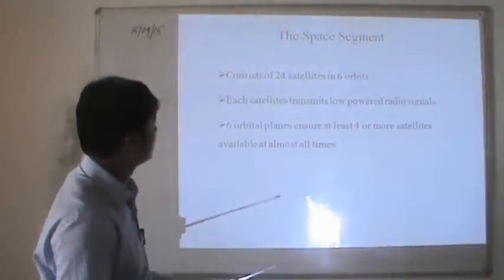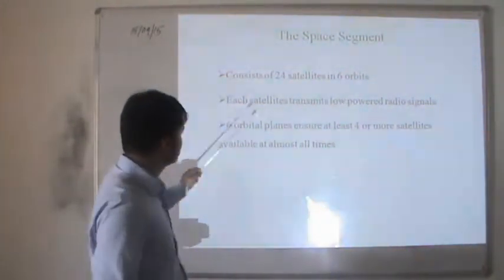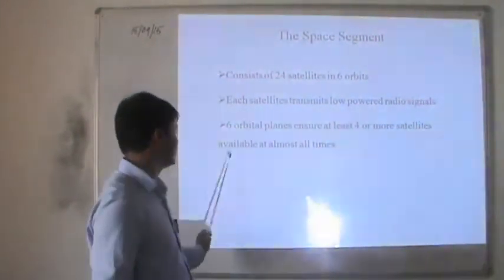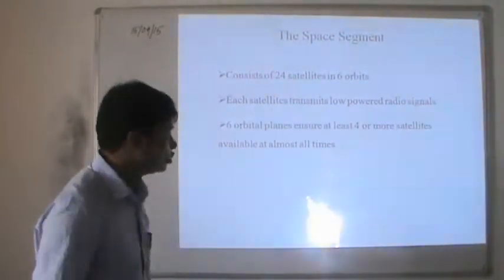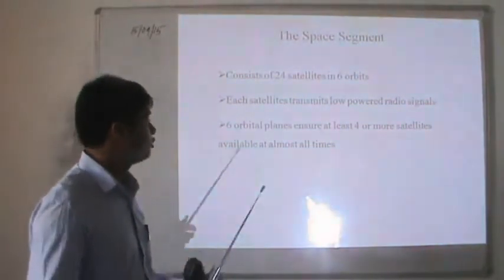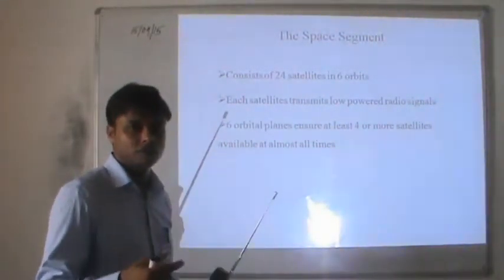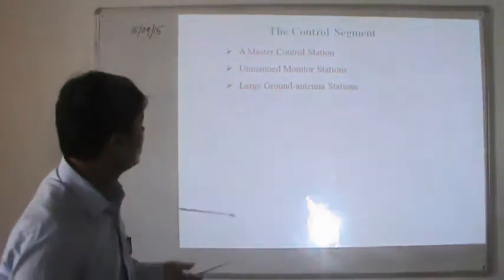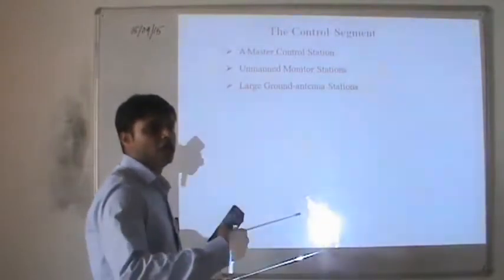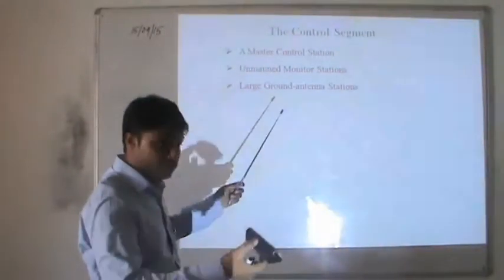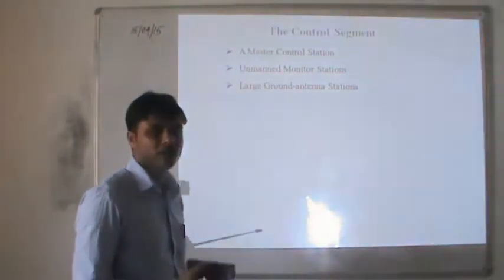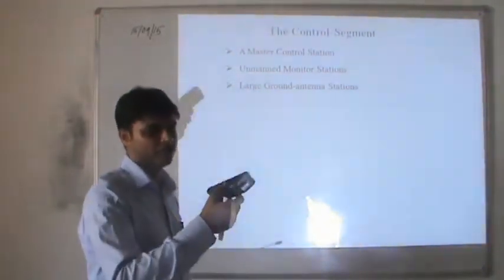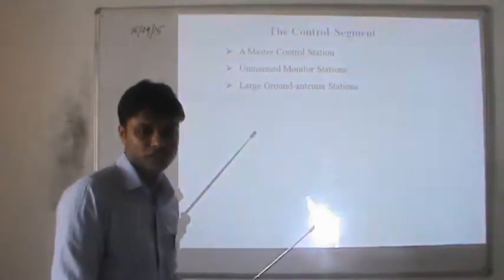The space segment consists of 24 satellites in 6 orbits. Each orbital plane ensures at least 4 or more satellites are available at almost all times. When positioning a particular subject, at least 4 satellites should be available to locate it accurately. The control segment includes a master control station to send and receive signals from satellites, monitoring stations, and large ground antenna stations.